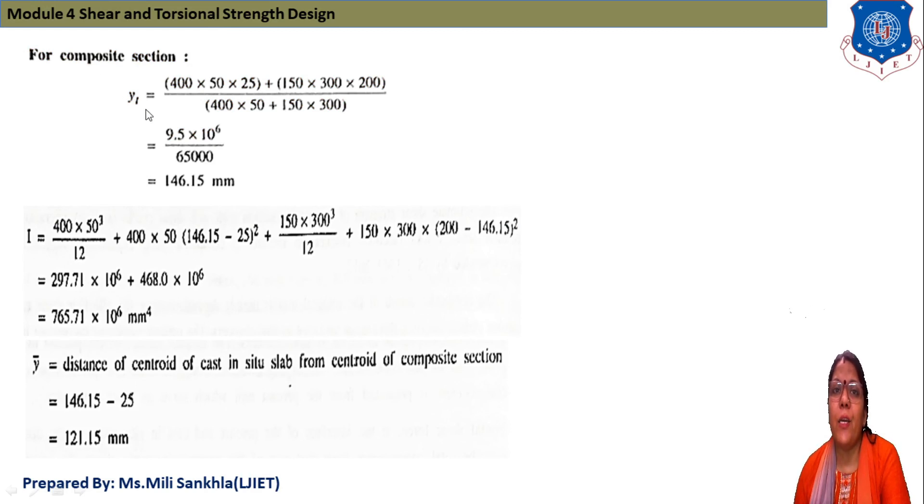Now we find ȳt for our composite section. That means flange 400 × 50 × 25, and web 100 × 300 × 200, divided by our area, we get 146.15 mm.